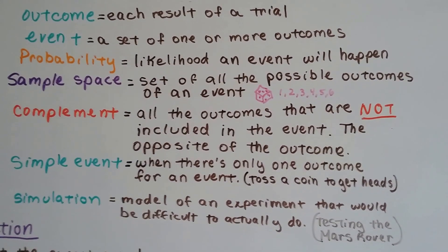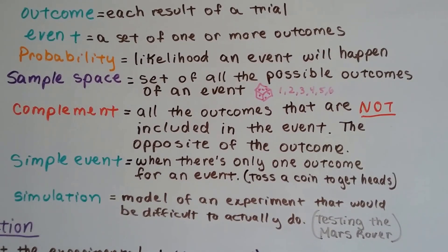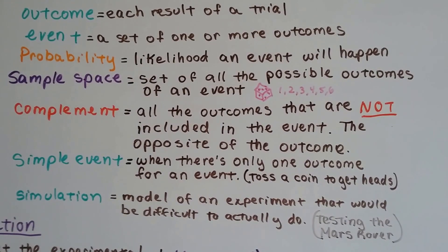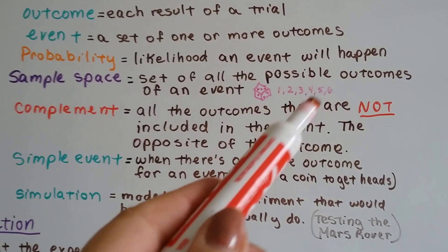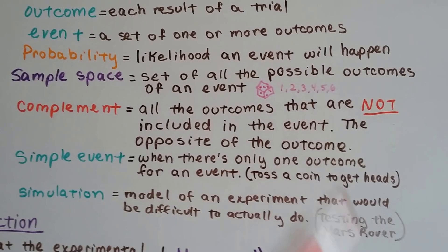The complement is all the outcomes that are not included in the event. It's the opposite of the outcome. So if we were trying to roll a three, the complement would be 1, 2, 4, 5, 6. It would be everything except the three.